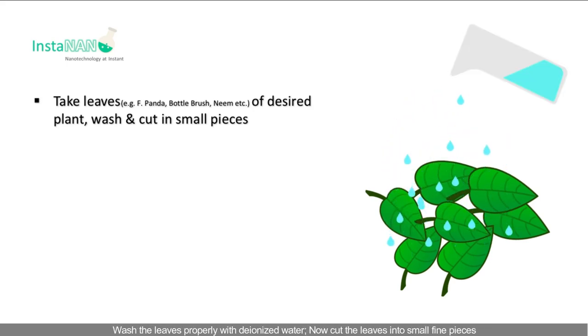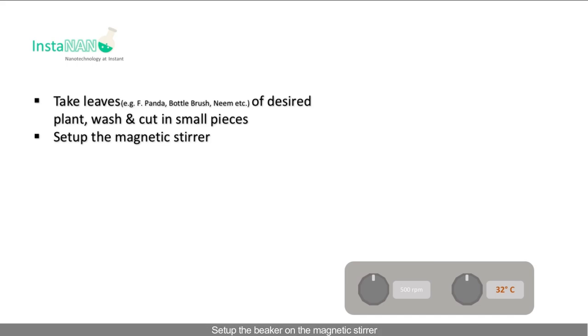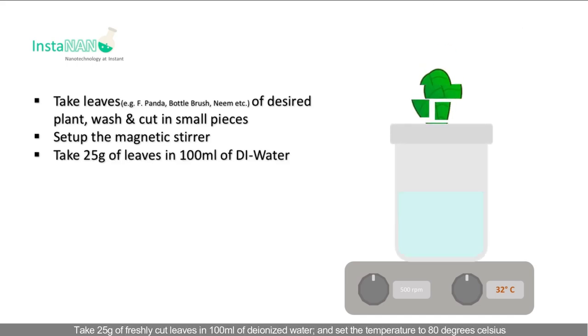with deionized water. Cut the leaves into small fine pieces. Set up the beaker on the magnetic stirrer.